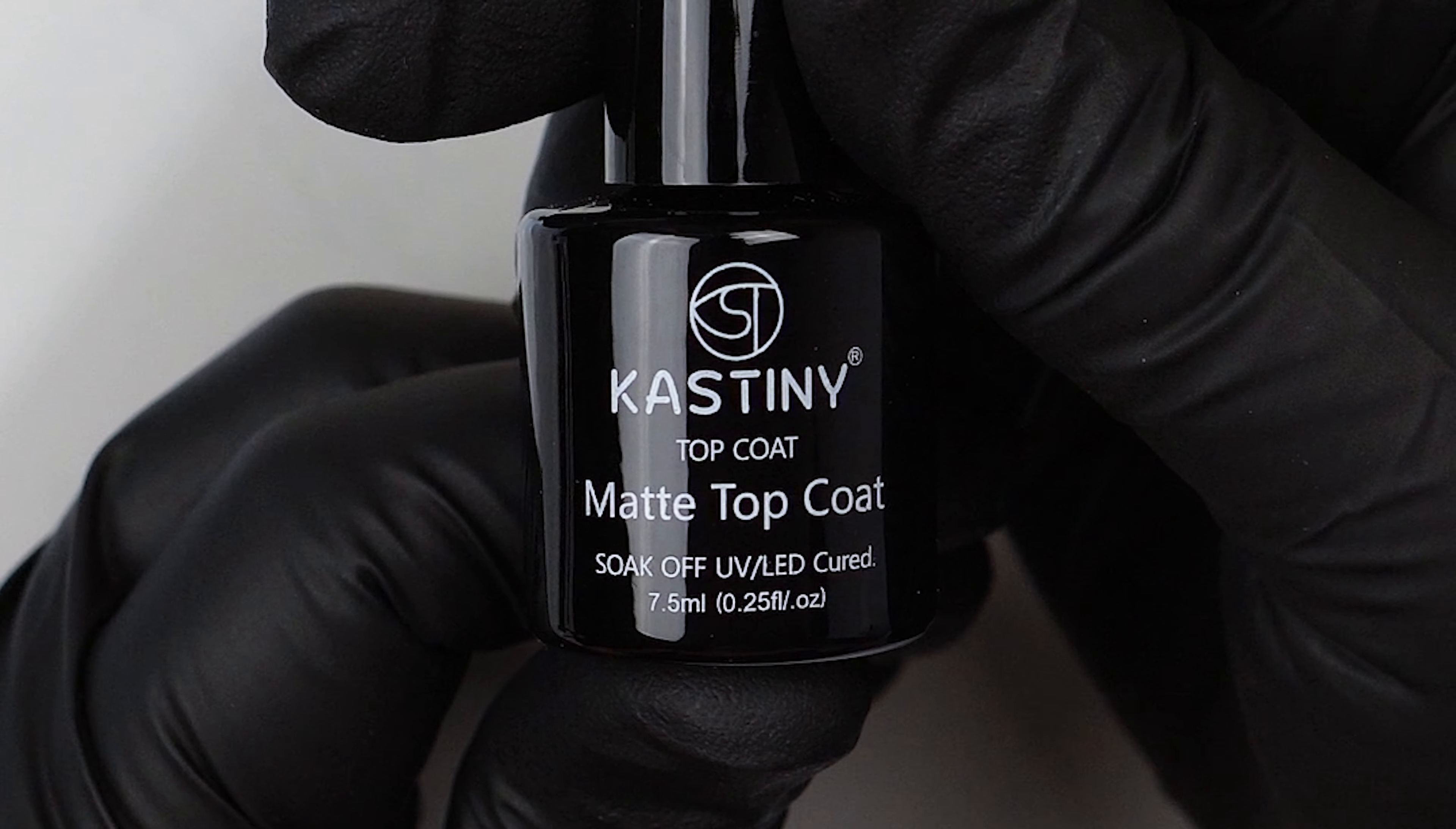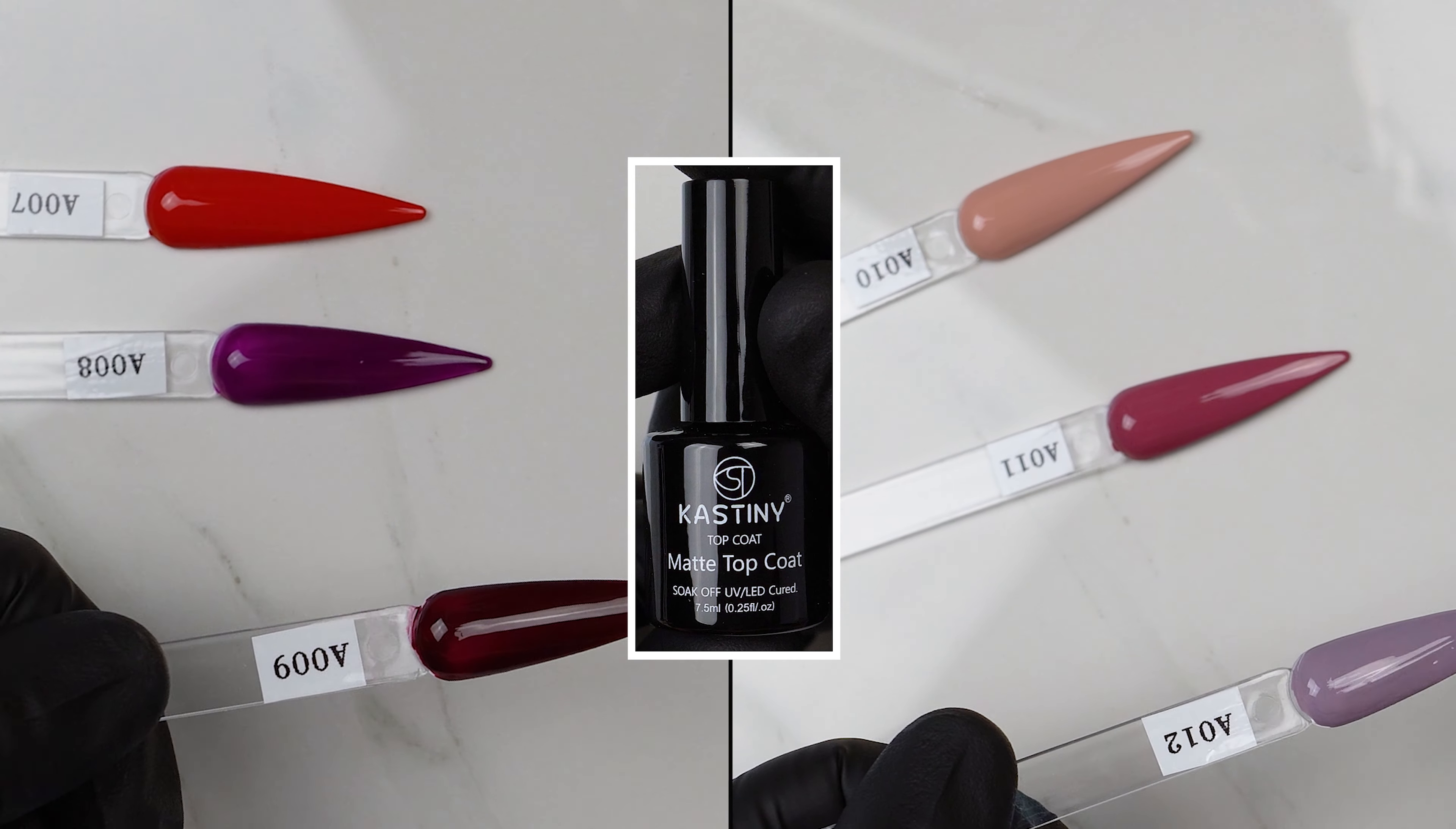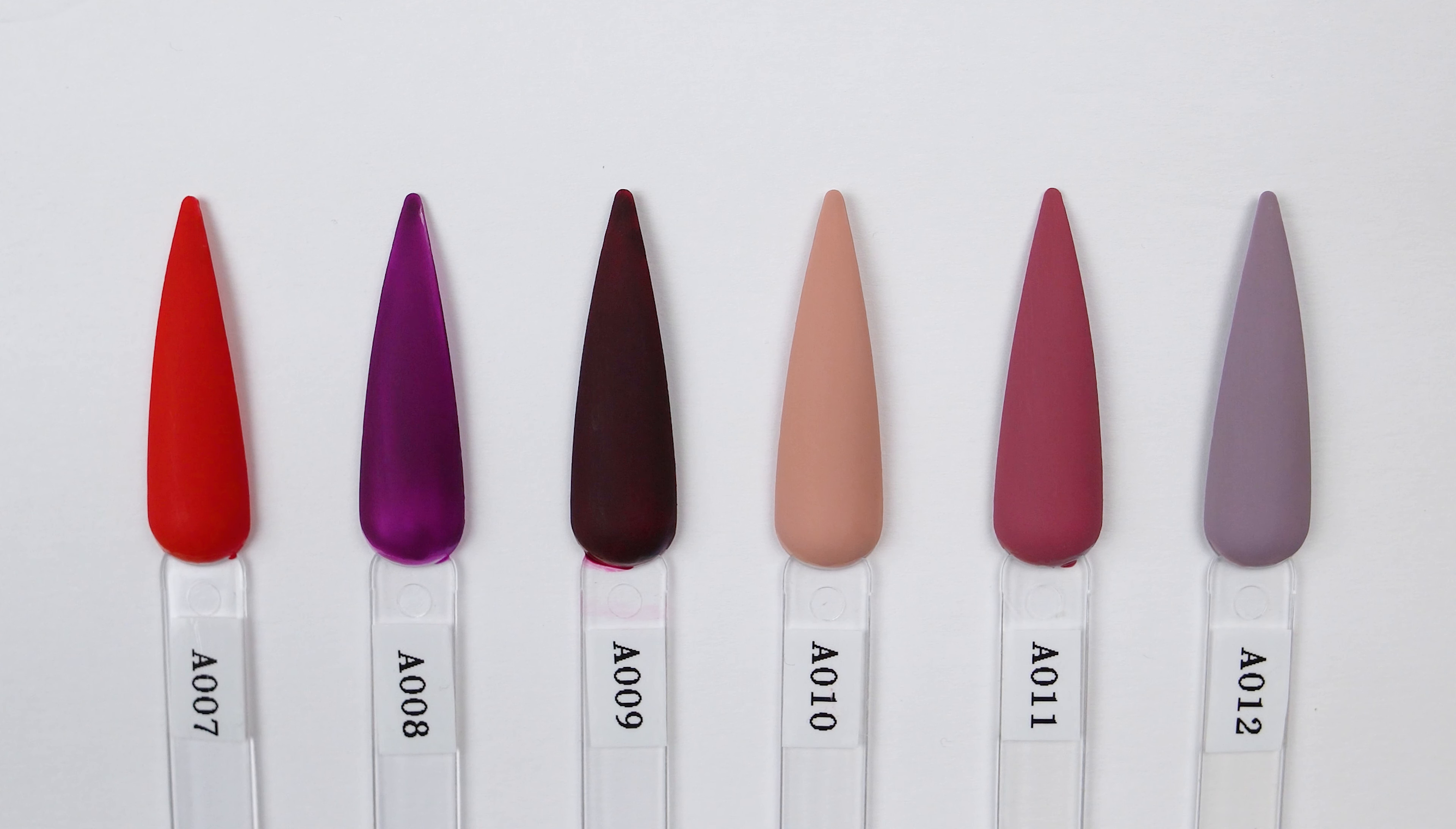The matte coat had a little bit of foggy look to it and I believe it's because of how they have to make it in order for you to achieve that matte look. I'm going to put it on all my colors that I swatched so that you guys can see how this matte color works. As you can see inside the lamp it instantly starts to change to that matte look and isn't that just beautiful. I just love the matte look. I honestly wasn't a fan of that matte look when I first started doing nails but as you can see the difference when it goes from normal to the matte look, it just looks so beautiful. It has this classy type look to it that I'm just in love with now.